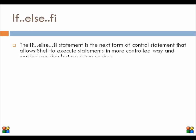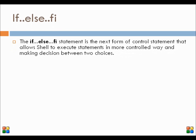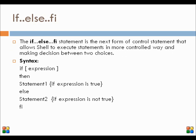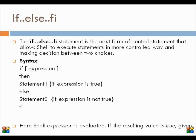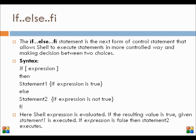The if-else-fi statement is the next form of control statement, where shell allows us to execute statements in a more controlled way and we can make a decision between two choices. First the expression is evaluated — if it is true, statement-1 is executed; otherwise, statement-2 is executed.